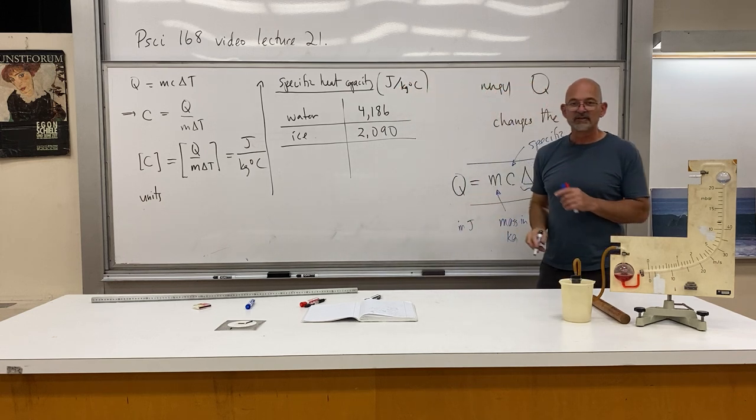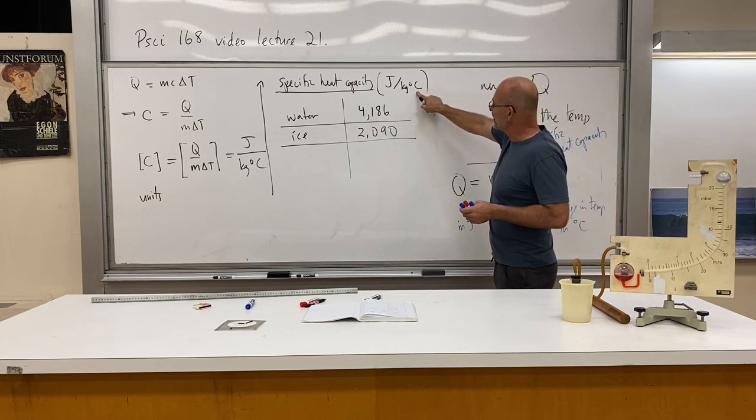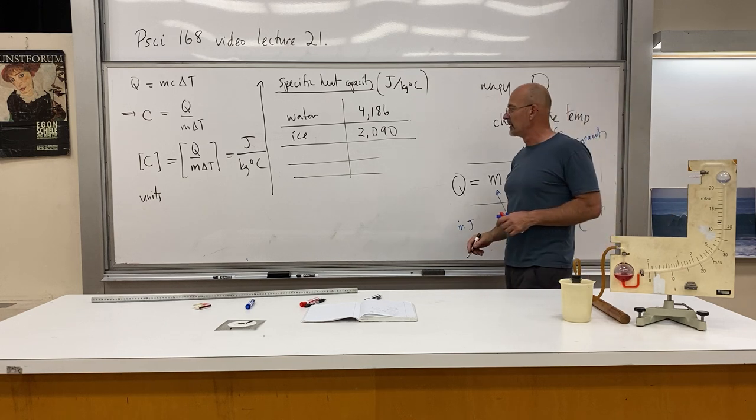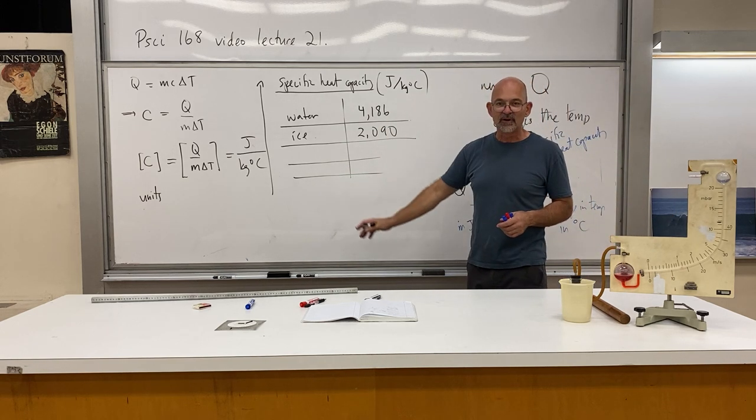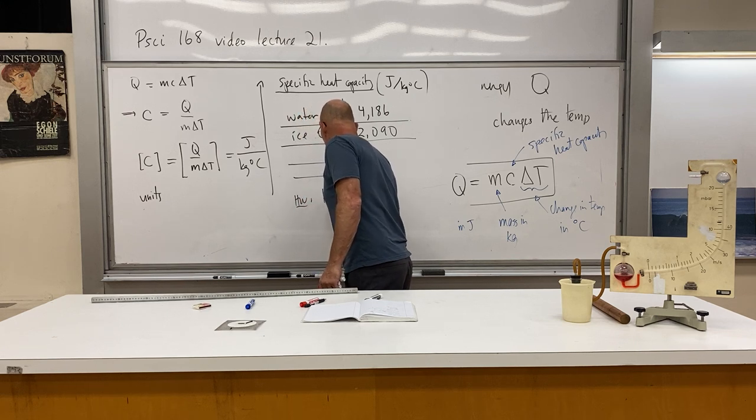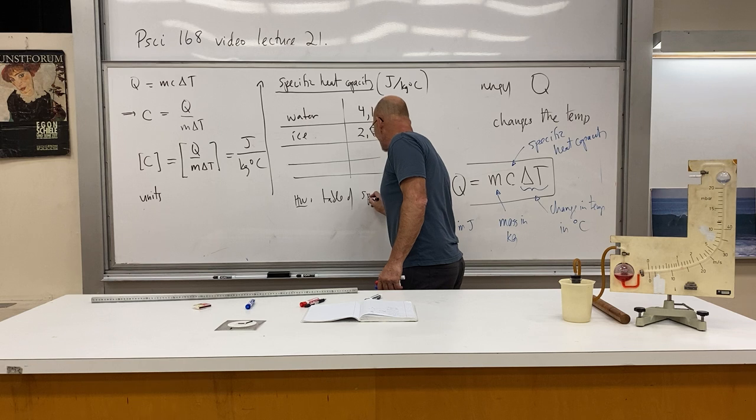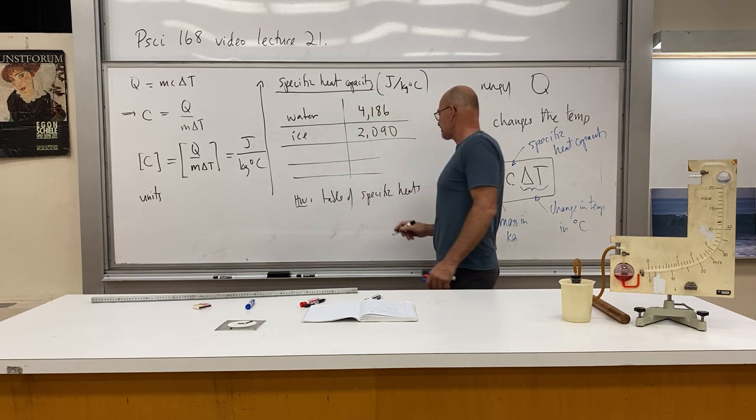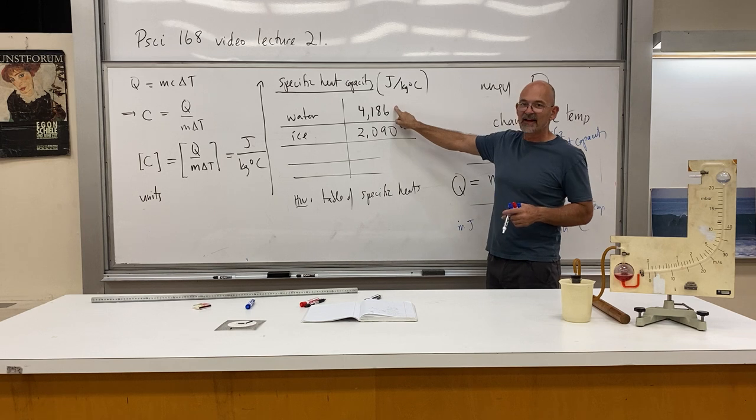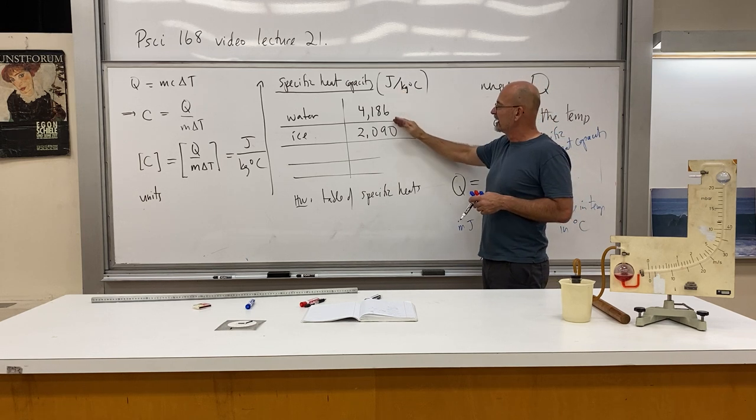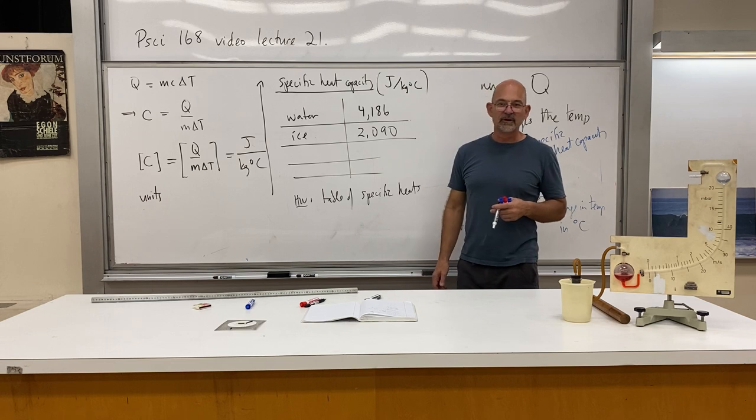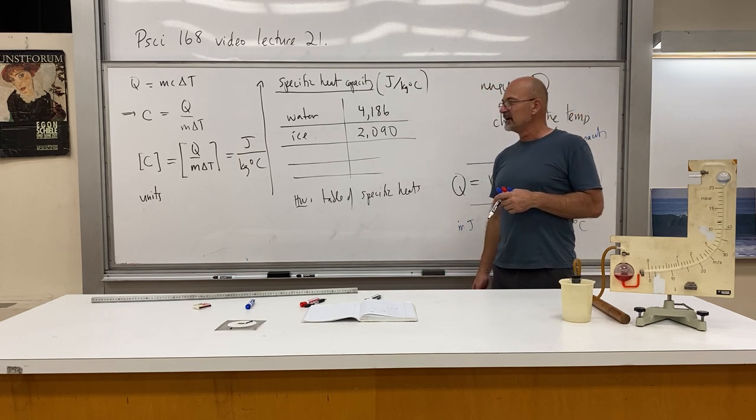The units are going to be joules per kilogram degree Celsius, very important for you guys. I'm going to start with water and ice. You think ice is just water, but they're different states of matter and they have different specific heat capacities. Water has 4,186. We could have actually guessed that because we knew about the calorie. Put the definition of the calorie in here and the mechanical equivalent of heat and get exactly that number. So this one we could have guessed, but ice has 2,090 joules per kilogram degree Celsius.